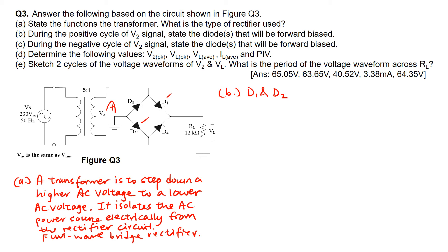Moving on to part C. During the negative half-cycle of the V2 signal, the two diodes that will be forward biased are the other two diodes — D3 and D4. So for part C, D3 and D4 will become forward biased.